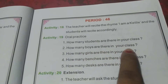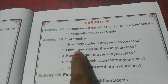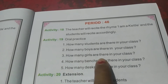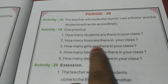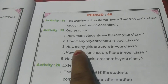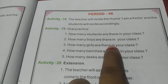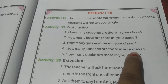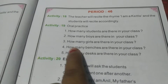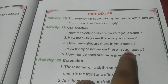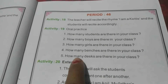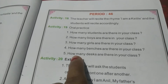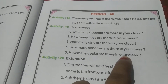How many boys are there in your class? There are 11 boys in our class. How many girls are there in your class? There are 20 girls in our class. How many benches are there in your class? There are 10 benches in our class. How many desks are there in our class? There are 10 desks in our class.